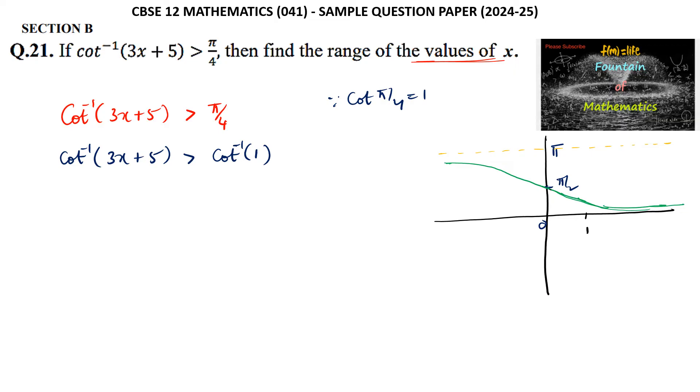Since x lies between 0 and 1, cot⁻¹(0) > cot⁻¹(x) > cot⁻¹(1). So for x less than 1, cot⁻¹(x) is greater than cot⁻¹(1).